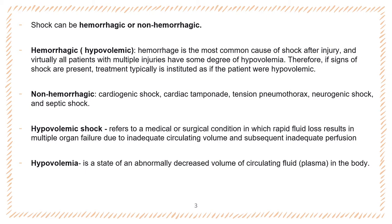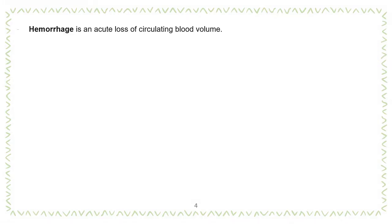Non-hemorrhagic shock can be divided into cardiogenic shock, cardiac tamponade, tension pneumothorax, neurologic shock and septic shock. Hypovolemic shock refers to a medical or surgical condition in which rapid fluid loss results in multiple organ failure due to inadequate circulating volume and subsequent inadequate perfusion. Hypovolemia is a state of abnormally decreased volume of circulating fluid in the body. Hemorrhage is an acute loss of circulating blood volume.